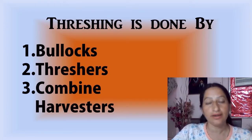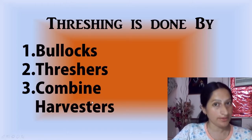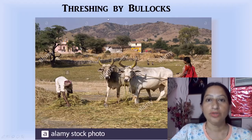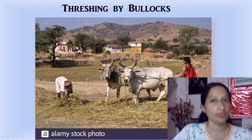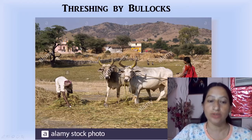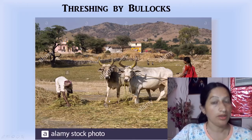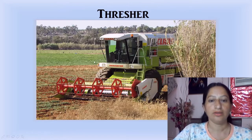Threshing is also done using bullocks, threshers, and combined harvesters. For threshing by bullocks, the bullocks are made to move on the stalks. The farmer collects the stalks and the grains fall down due to the heavy hooves of the bullocks.